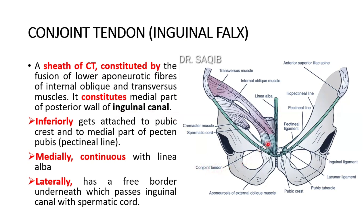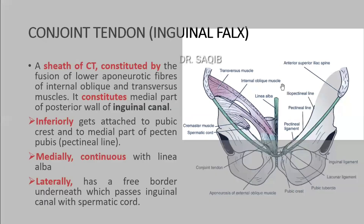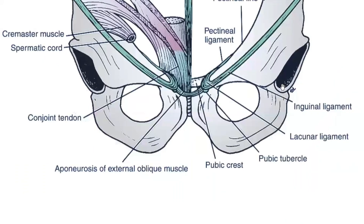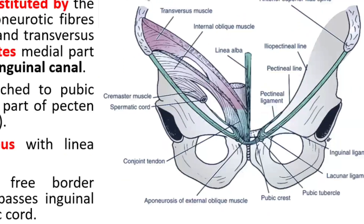Here you can see the labeling of the conjoint tendon. Inferiorly, it gets attached to the pubic crest and to the medial part of the pecten pubis — that is the pectenial line. You could see the inferior attachments here. This is the conjoint tendon and these are the attachments to the pectenial line.